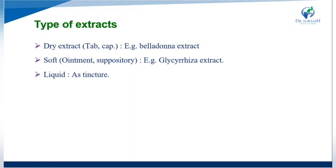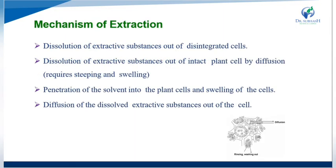Now we will see the mechanism of the extraction process. It involves dissolving the extractive substance out of disintegrated cells, and dissolution of the extractive substance out of intact plant cells by diffusion. This requires steeping and swelling procedures — the solvent penetrates into the plant cell wall, causing swelling of the cells, followed by diffusion of the dissolved extractive substance out of the cell.